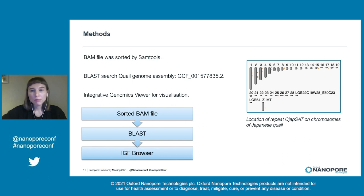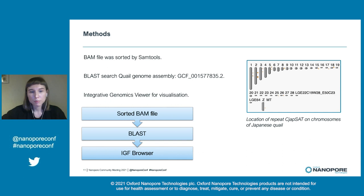The BAM file was sorted by SAMtools. We used BLAST to search for repeat monomers in the latest available Quail genome assembly. For visualization of our data, we used the genome browser Integrative Genomics Viewer, where you can choose a particular chromosome and particular region of interest.